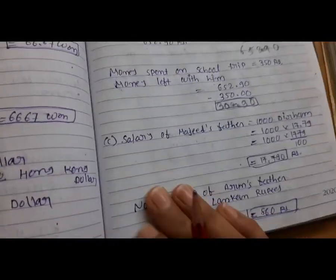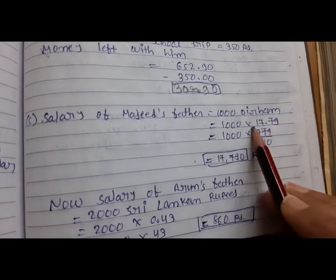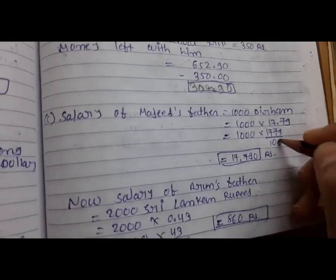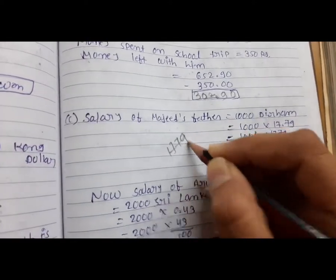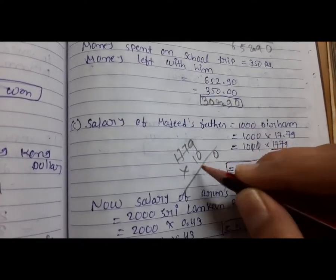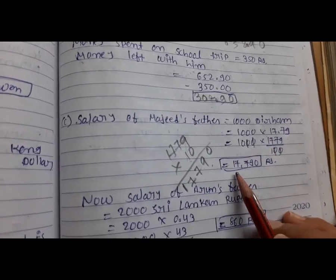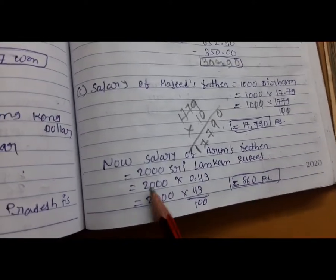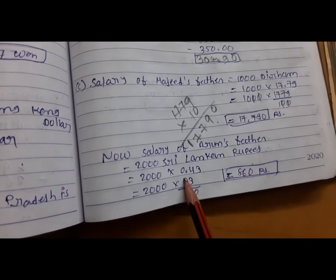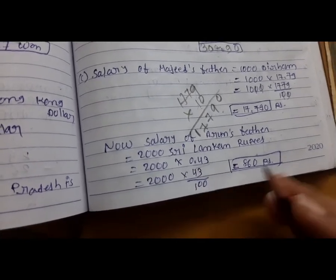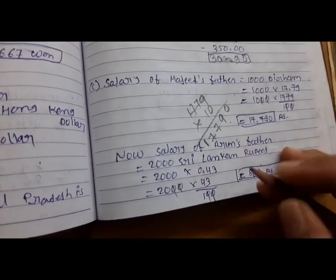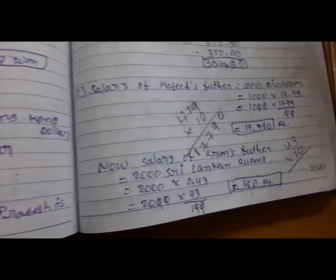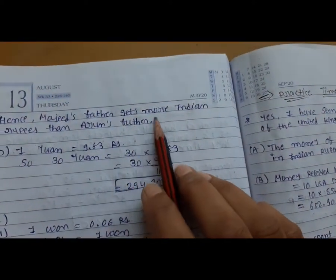Sri Lanka rate: 0.43 rupees, UAE dirham rate: 17.79. Salary of Majid's father: 1000 dirham × 17.79 = 17,790 Indian rupees. Salary of Arun's father: 2000 × 0.43 — that is 43/100 — so 2000 × 43 upon 100 = 860 rupees. So Majid's father gets more Indian rupees than Arun's father.